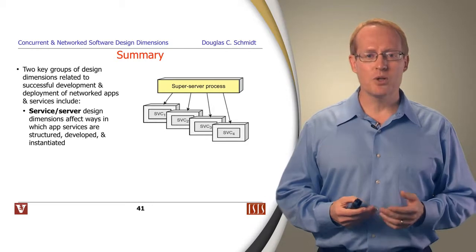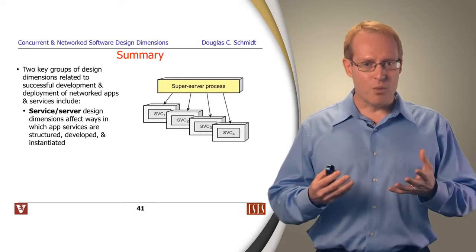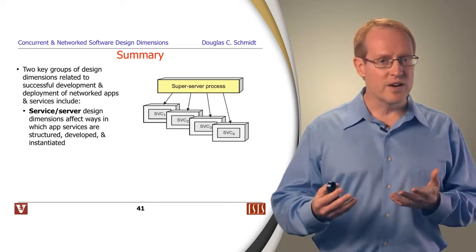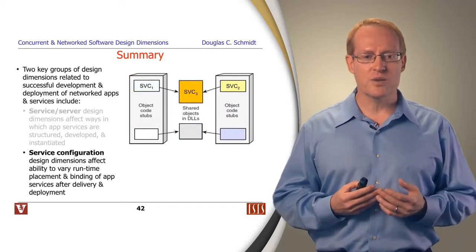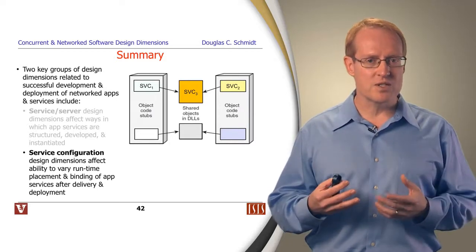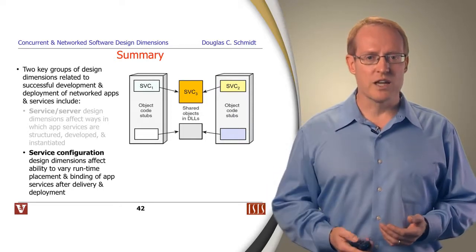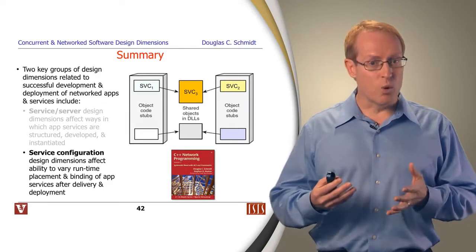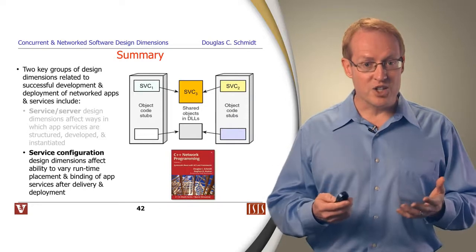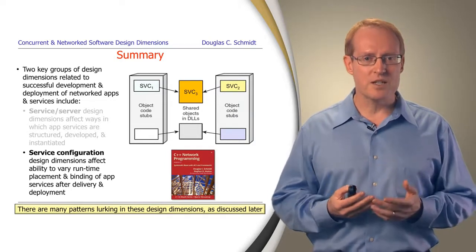To summarize this part of the module, we covered several groups of design decisions related to developing and deploying networked applications. We talked about service and server design dimensions, which affect how applications and services are structured, developed, and instantiated. We also discussed service configuration — design dimensions relating to how you change system configuration and the placement and binding of services together at runtime or installation time. These topics are described in more detail in C++ Network Programming Volume 2, and there are quite a number of patterns in this space that we'll cover in later parts of the course.